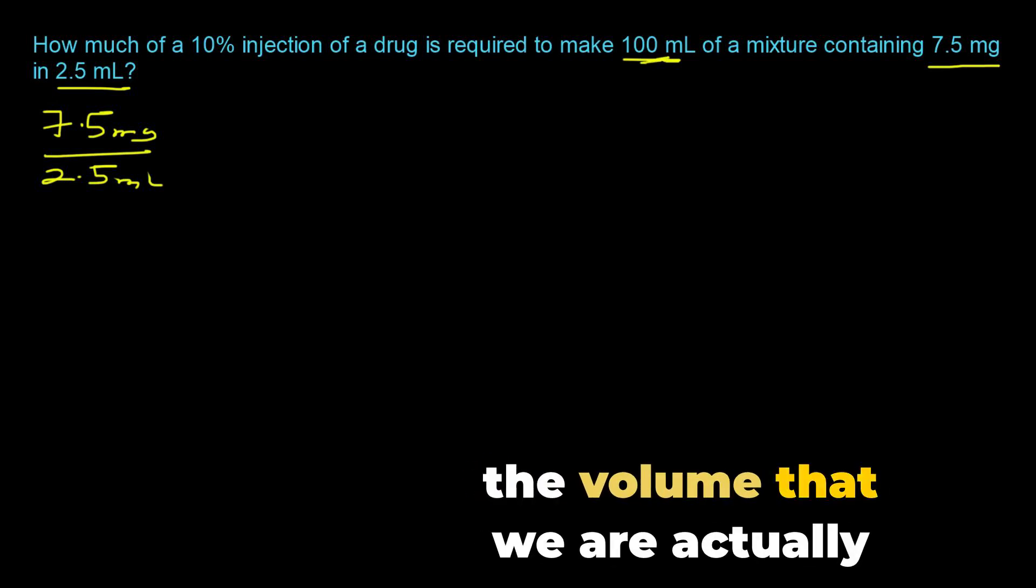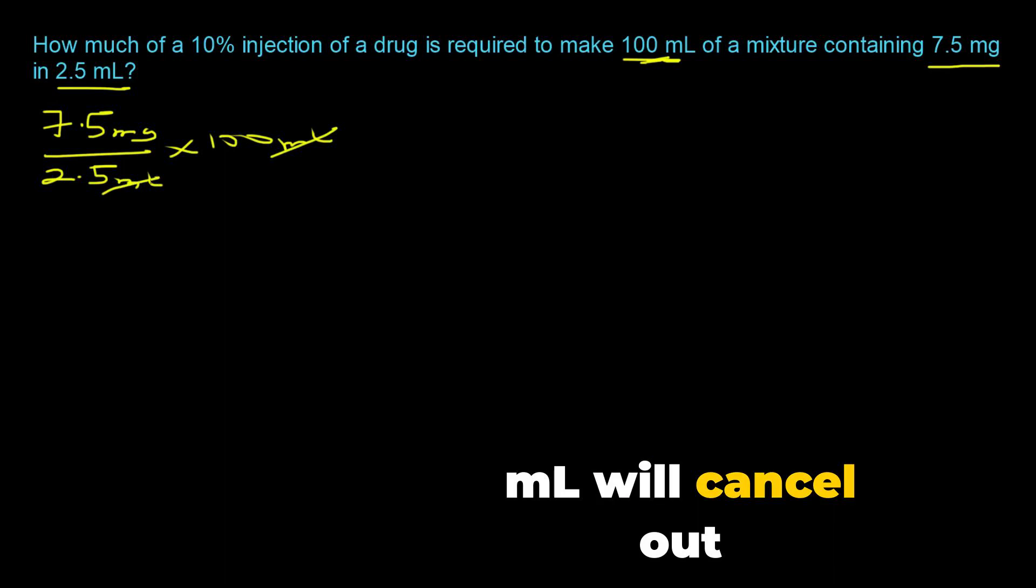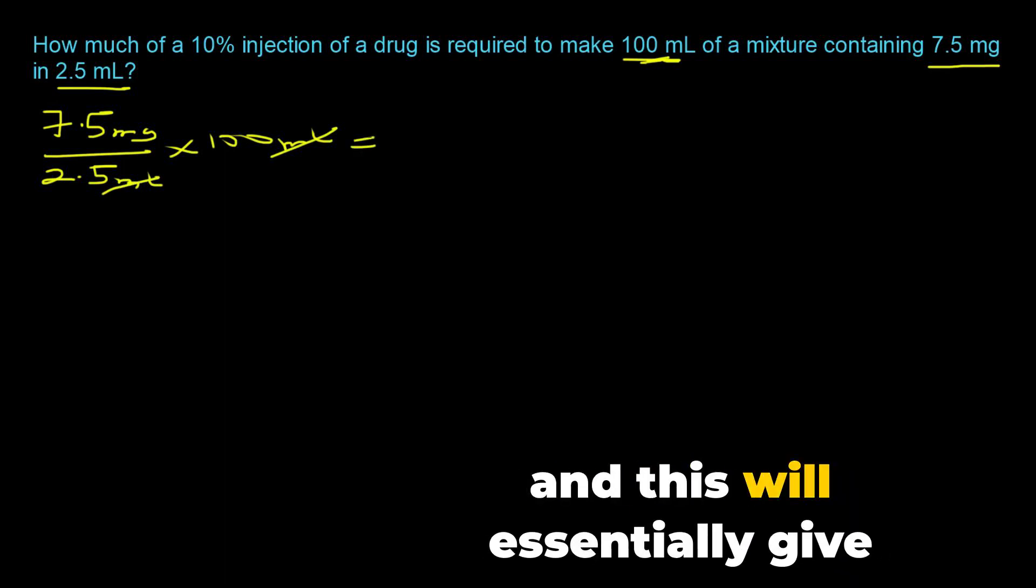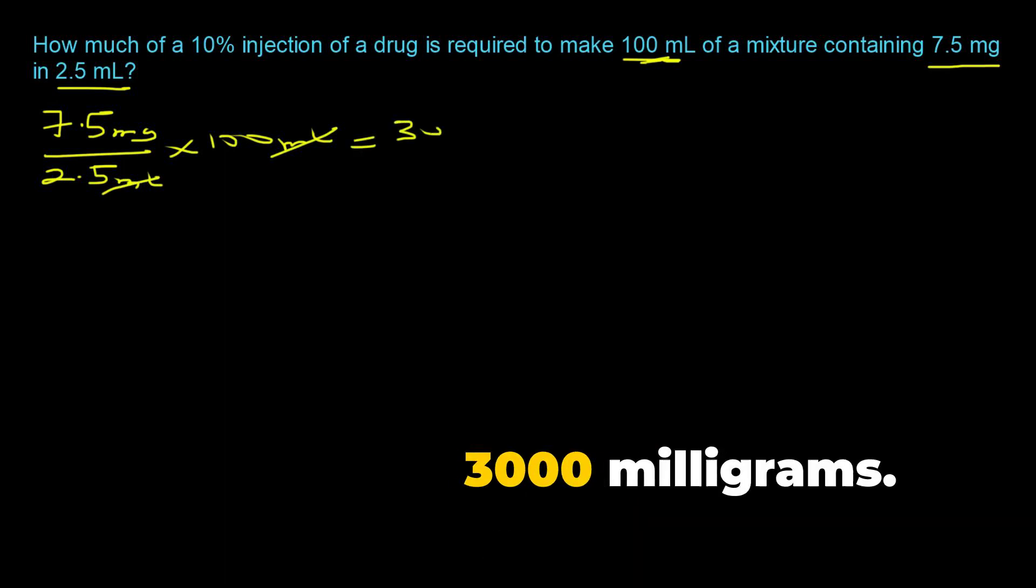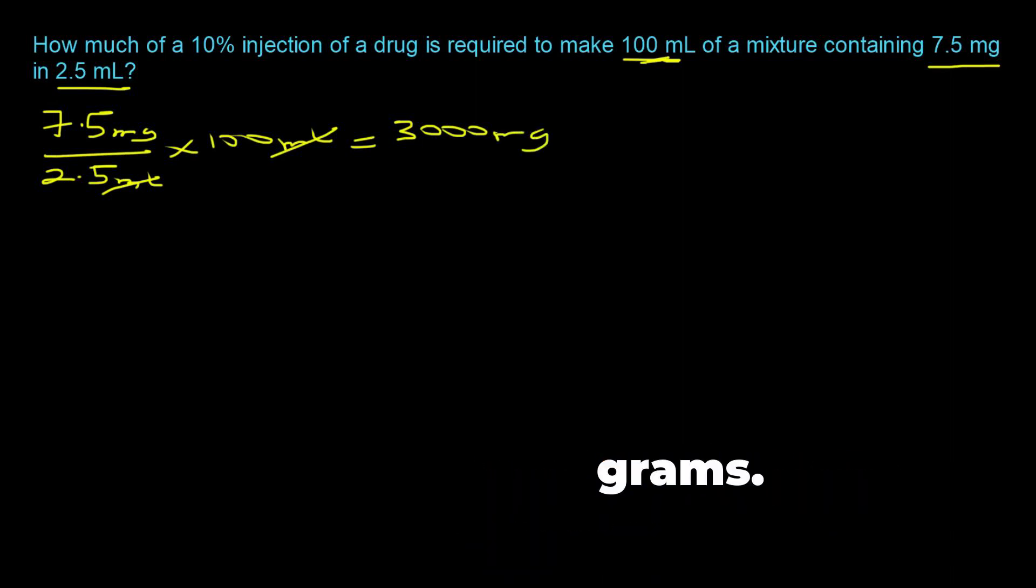And then we can multiply this by the volume that we're actually interested in, so times 100 milliliters. The mL will cancel out and this would essentially give you 3000 milligrams.